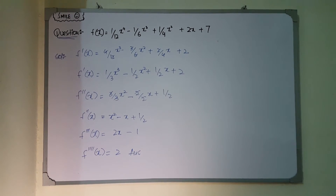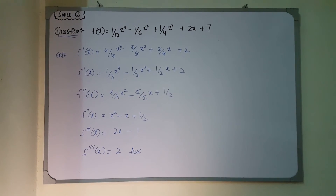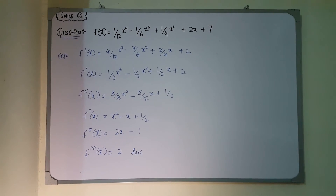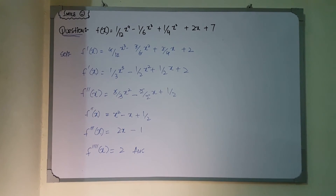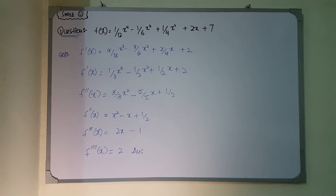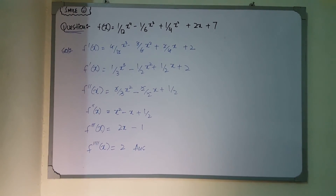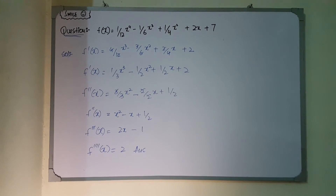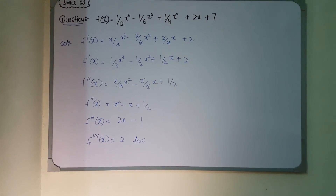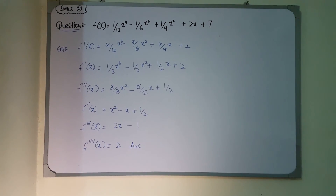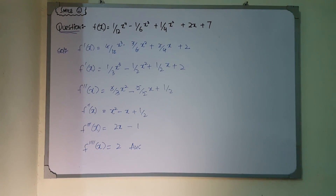Applying the derivative again gives the fourth derivative f⁴(x) = 2, since 2x differentiates to 2 and −1 being a constant becomes 0. We write four dashes to indicate the fourth order derivative. If the question asked for the fifth order derivative, we apply the derivative once more: since 2 is a constant, its derivative is 0. So f⁵(x) = 0.